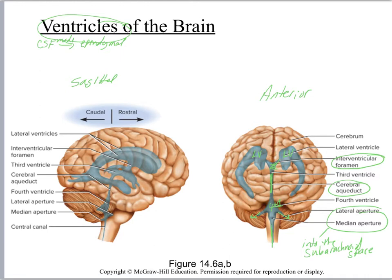Over here again, you've got the lateral ventricle, you have the foramen right here, this is the third ventricle — which remember surrounds the diencephalon — you've got the cerebral aqueduct, the fourth ventricle, and the spinal canal, or central canal.